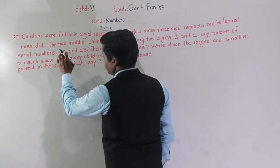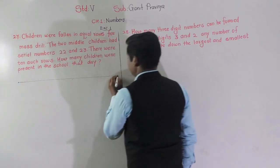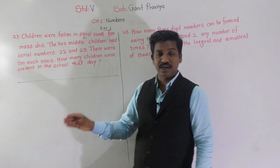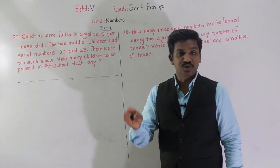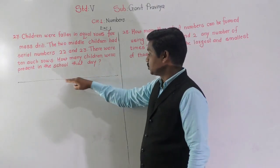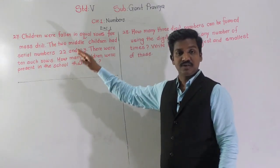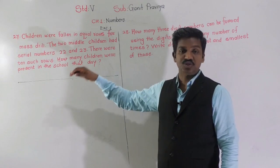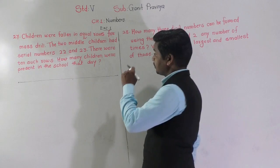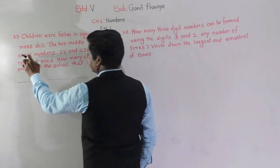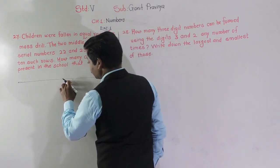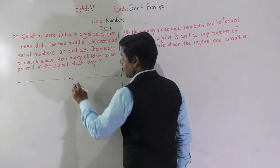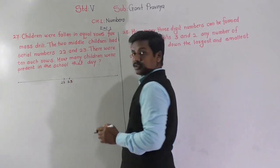The two middle children had serial numbers 22 and 23. Consider one row — we do not know how many students are in each row. These two children are in the middle, meaning before them and after them there are the same number of students. As the roll number of the first middle child is 22, before them there will be roll numbers 1 to 21, so 21 students are before them.